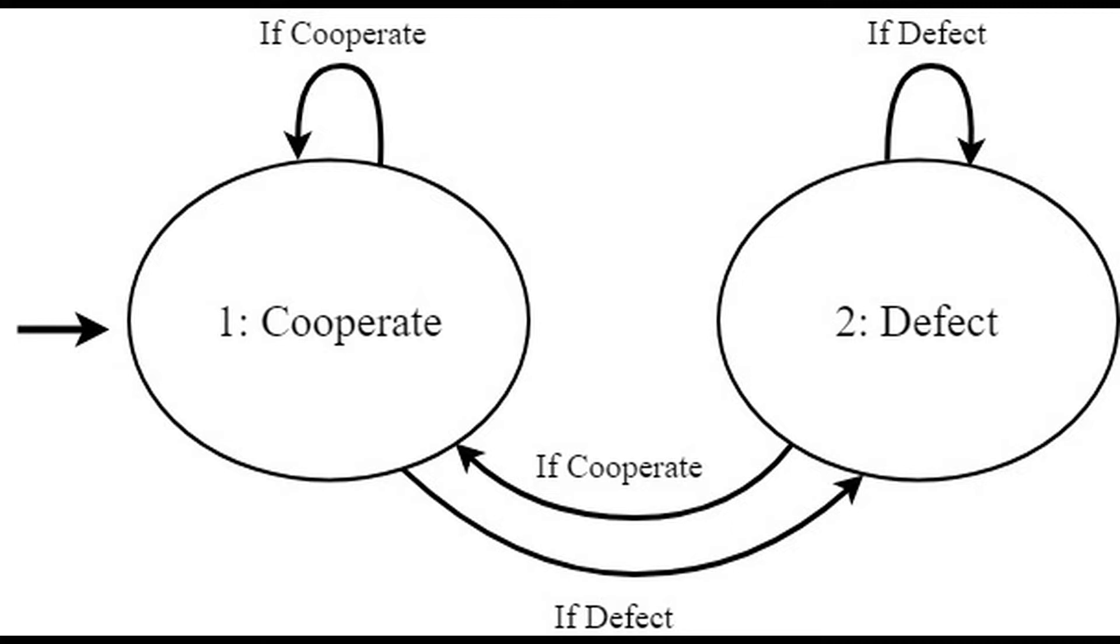If both individuals know that there will only be one interaction, then it is manifestly better to cheat. However, if there is an unknown number of future interactions, then tit for tat is evolutionarily the best strategy. As you can see, this isn't altruism in the pure sense. It's altruism with the expectation of getting something in return. Selfish altruism.